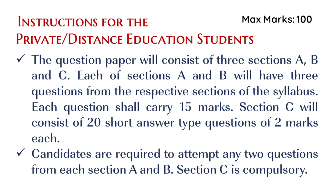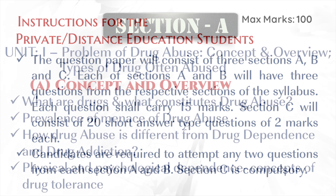Each of sections A and B will have three questions from the respective sections of the syllabus, and each question shall carry 15 marks. Section C will consist of 20 short answer type questions of two marks each. Candidates are required to attempt any two questions from each of sections A and B. Section C is compulsory.